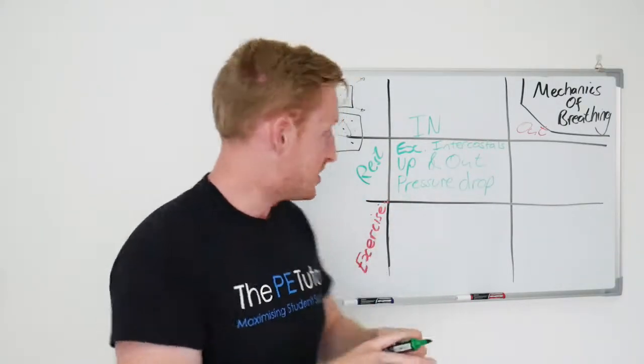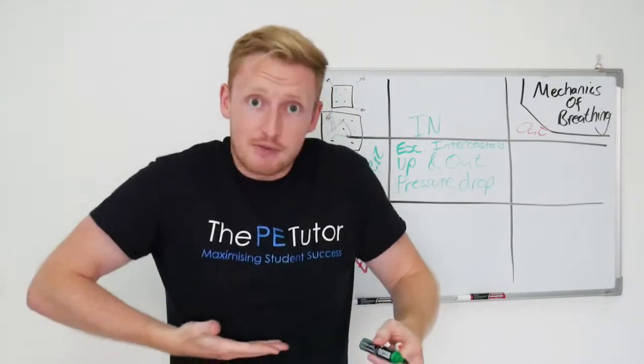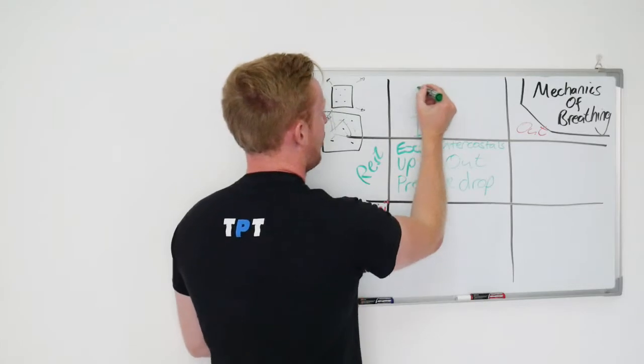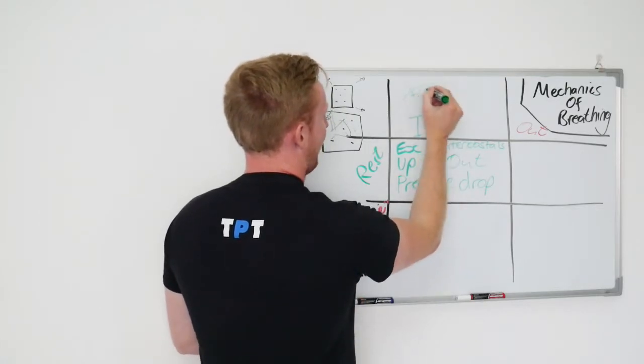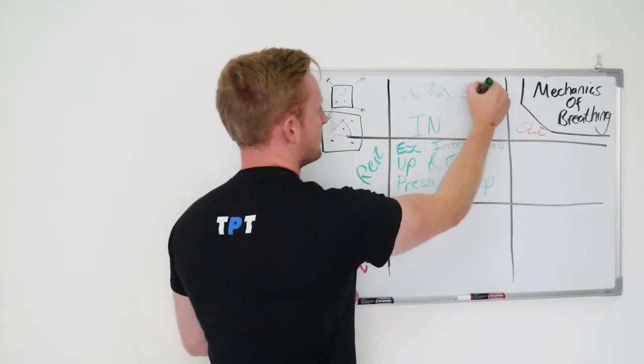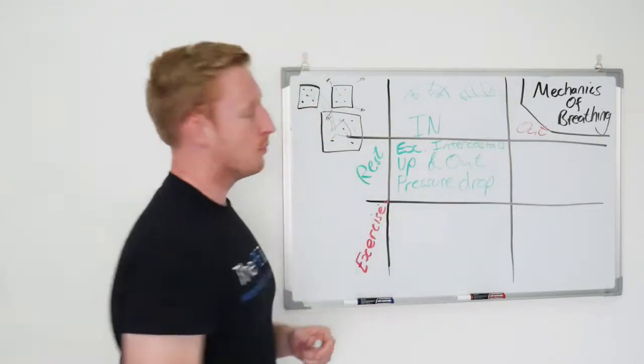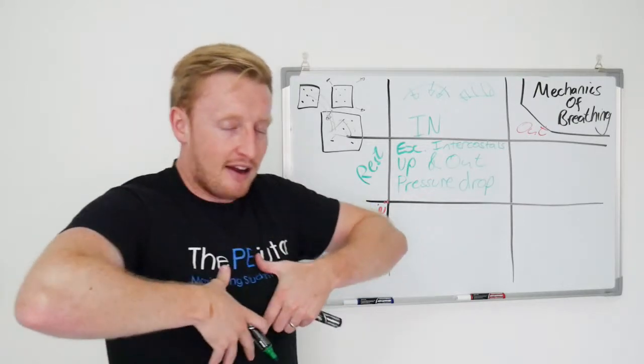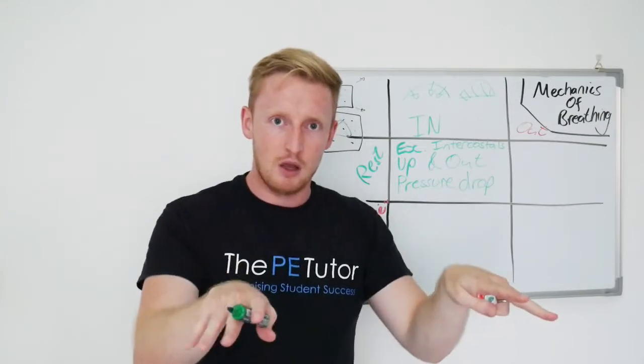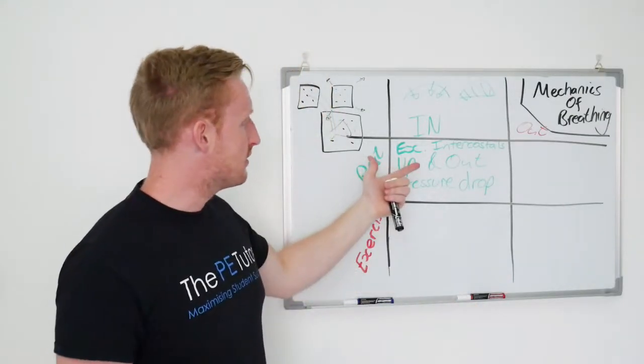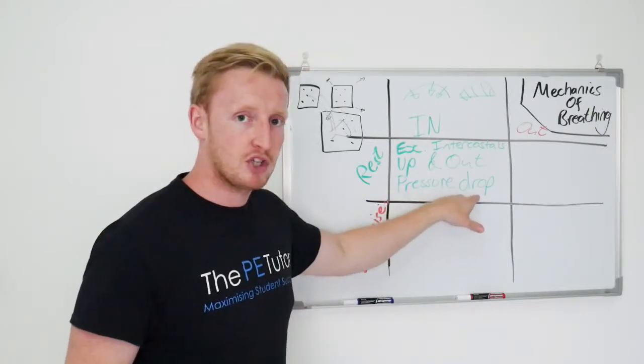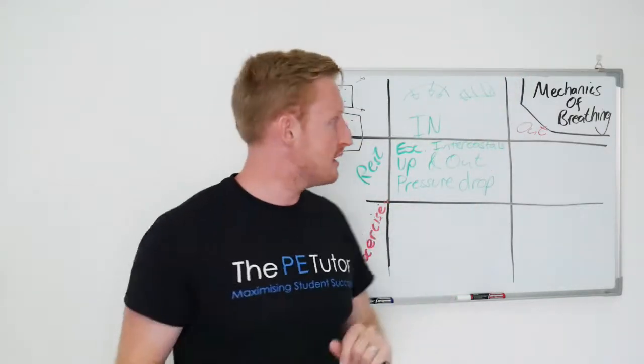We've also got the diaphragm, which is at the base of our ribs, and if that flattens, because that's normally a dome shape, if that flattens downwards into a flat shape, we've just made loads more space. So we've got the external intercostals lifting the ribs up and out, we've got the diaphragm dropping and flattening, we've increased the size of the thoracic cavity, we've reduced the air pressure, air moves in, and that's it, we've just breathed.